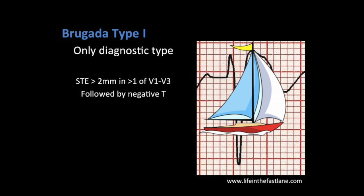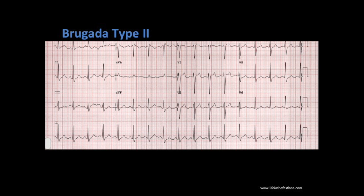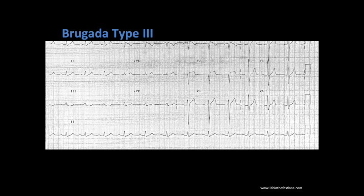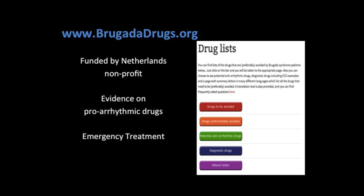To actually diagnose Brugada syndrome, they have to have the Type 1 morphology in conjunction with documented VF or VT, a familial history of sudden cardiac death, inducible ventricular tachycardia, or syncope. Brugada Type 2, which is non-diagnostic, is greater than 2 mm saddleback ST elevation. Type 3, also not diagnostic, is Type 1 or Type 2 but with less than 2 mm ST elevation. Brugada is one of those things we're always scared of but rarely see. I want to put in a plug for a very useful website, BrugadaDrugs.org, which is funded by a Netherlands non-profit, where you can find evidence for pro-arrhythmic drugs — drugs that may throw people with Brugada into a bad rhythm — as well as emergency treatment guidelines.